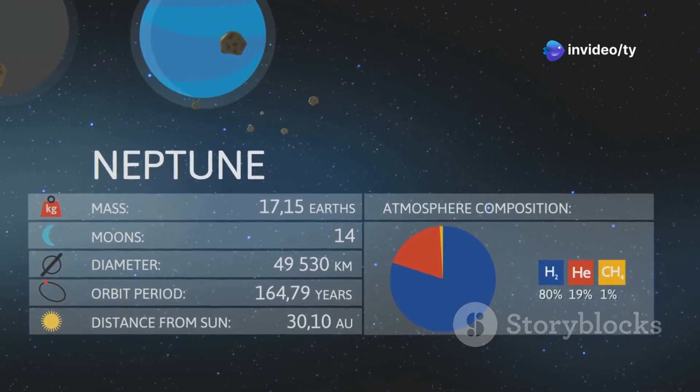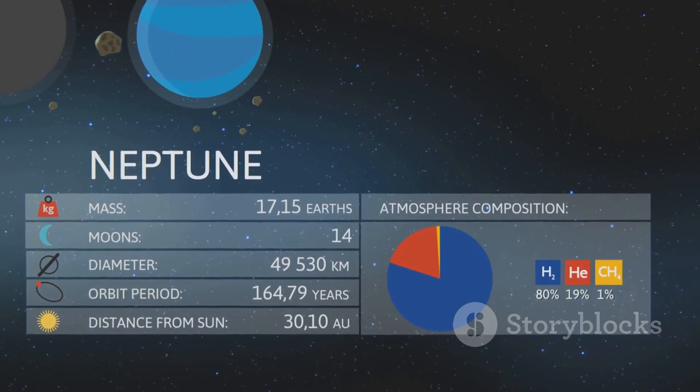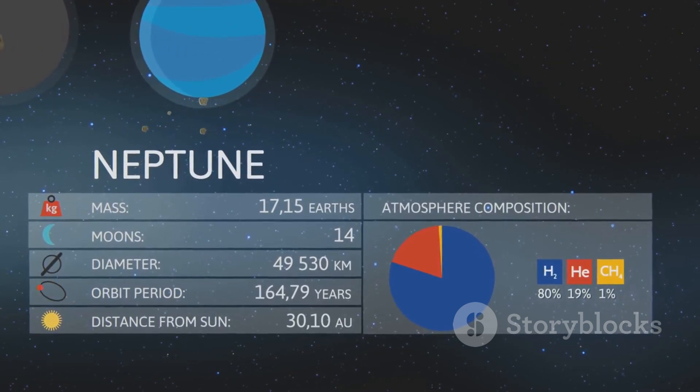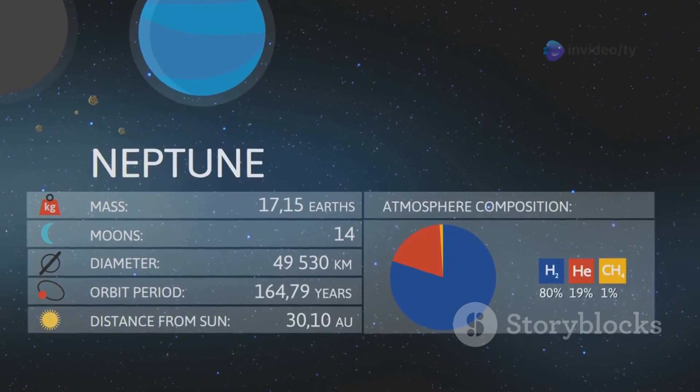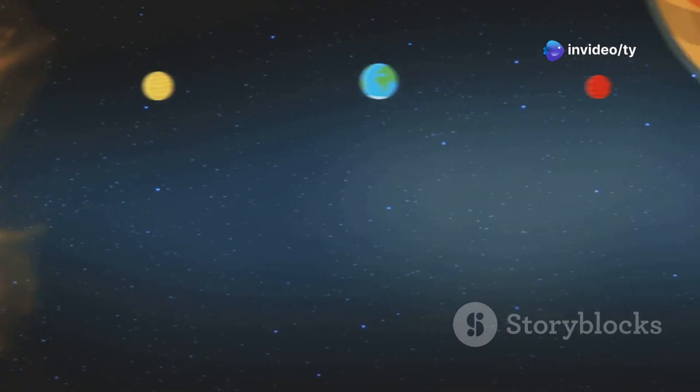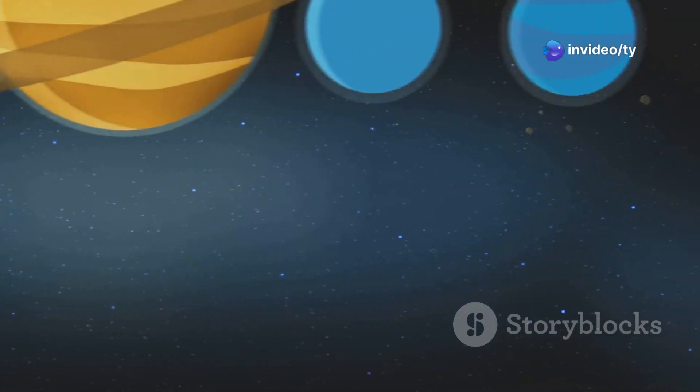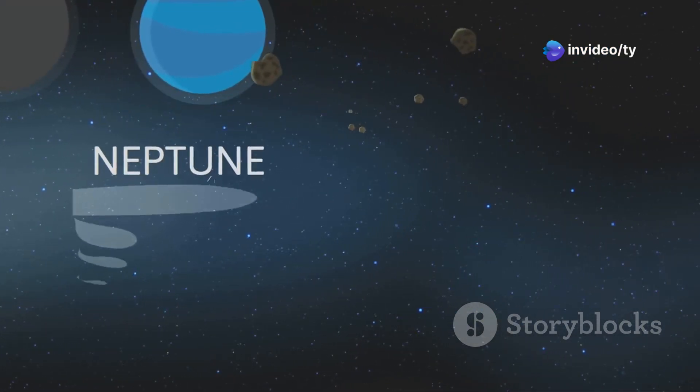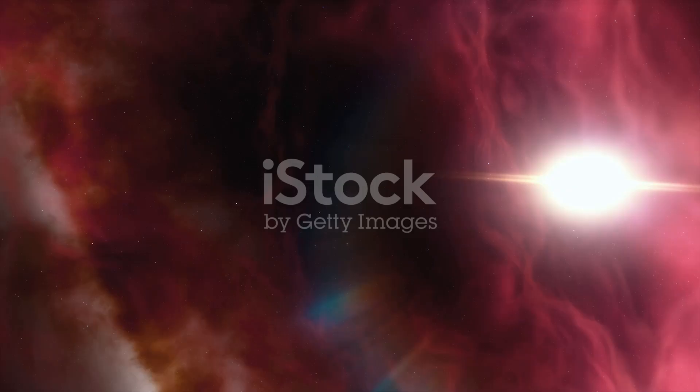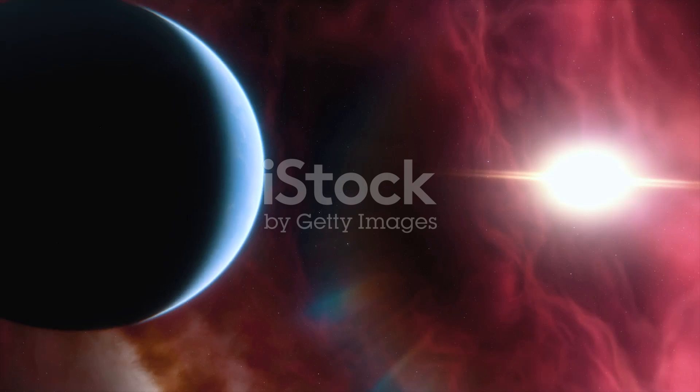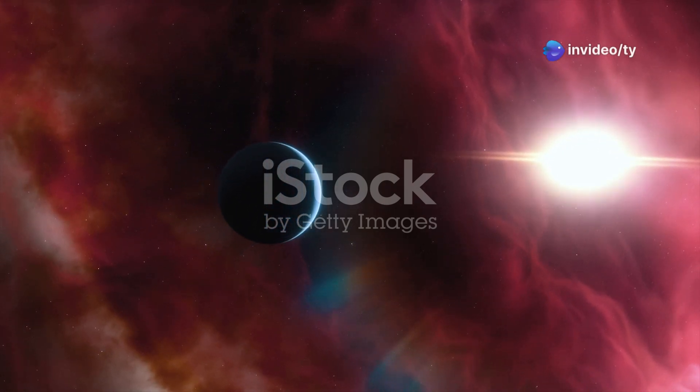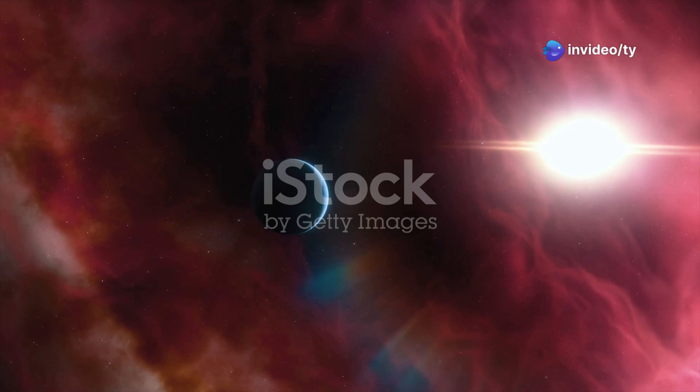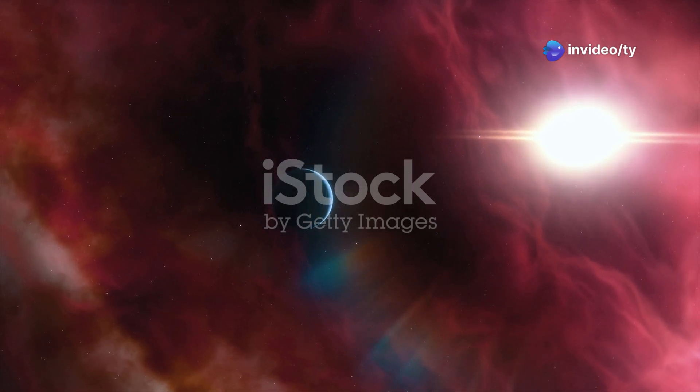This star, known as Kepler 452, is a G-type main sequence star, much like our Sun, which means it has similar characteristics and properties. The discovery of Kepler 452b was made by NASA's Kepler space telescope, which has been instrumental in identifying thousands of exoplanets in our galaxy. This planet is often referred to as Earth's older cousin, and for good reason. Kepler 452b shares many similarities with Earth, making it a prime candidate for the search for extraterrestrial life.